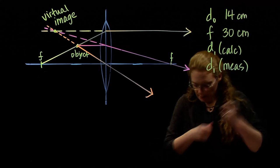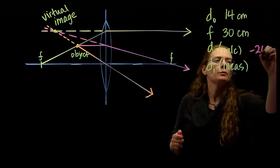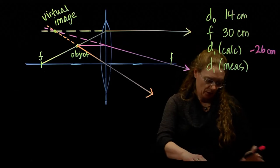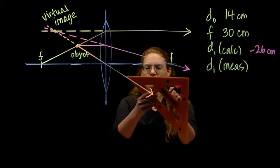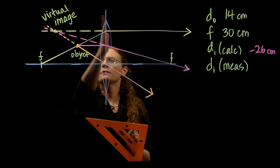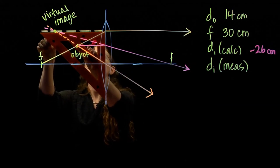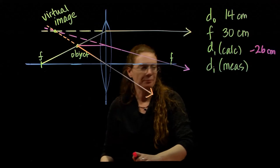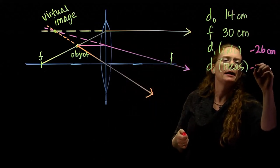Calculated DI, I get negative 26 centimeters. Let's measure it. 26 centimeters, that should fit here. Okay, so, lens to image. And, well, 25. We're not too bad. DI measured, negative 25.